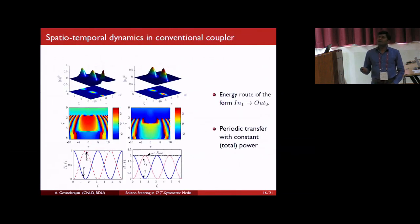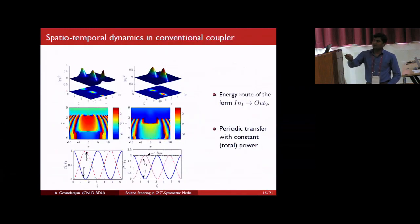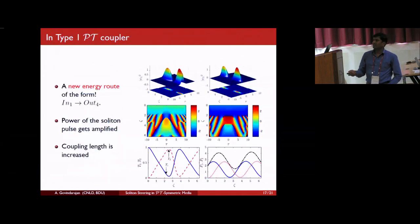Now we focus on the spatio-temporal dynamics in conventional systems. And now, we are injecting the soliton pulses at the input port. After the back and forth propagation, it exits at the same output. Also, it shows some sort of periodic transformation with the total power is conserved. But what about in PT-symmetric systems? There is a new energy route. You note that? Once again, we are injecting the soliton pulses at the input port, but it exhibits here. So, it exhibits some sort of new energy route. Then also, look at this power, total power. It also gets amplified. However, unfortunately, the coupling length has been increased. Here, it is low, but here it has been increased.